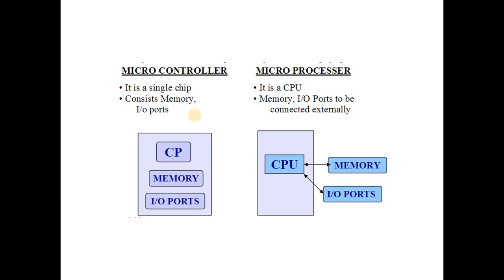A microcontroller is the whole system on a chip — it consists of memory and input/output ports all on a single chip. A microprocessor is just the CPU on the chip; memory and input/output ports need to be connected externally.